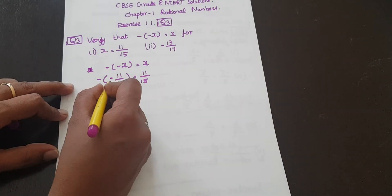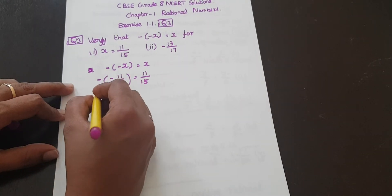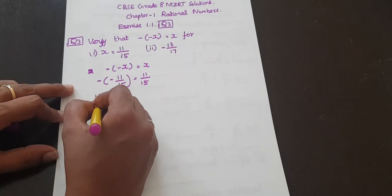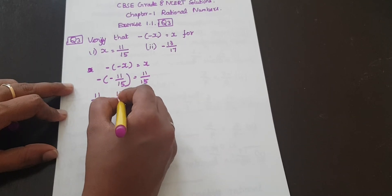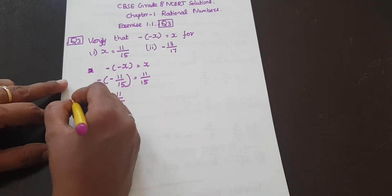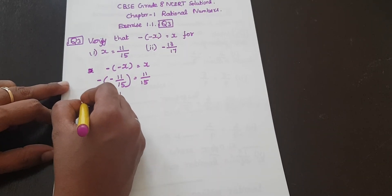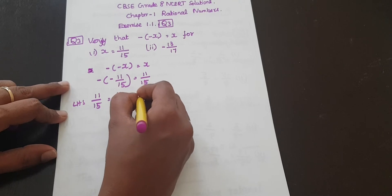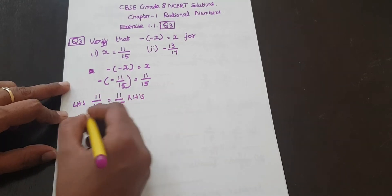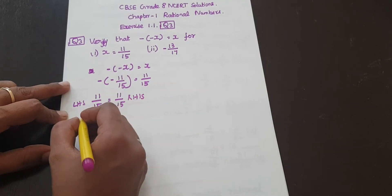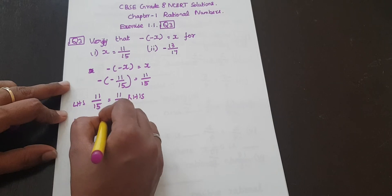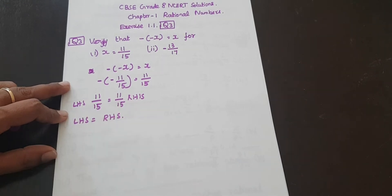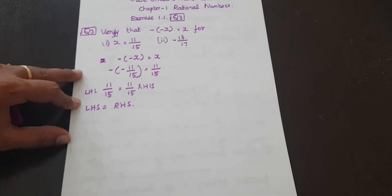Now, minus into minus is plus. So this is 11 by 15. Left hand side is 11 by 15, right hand side is 11 by 15. So left hand side is equal to right hand side. LHS is equal to RHS. Next, part 2.